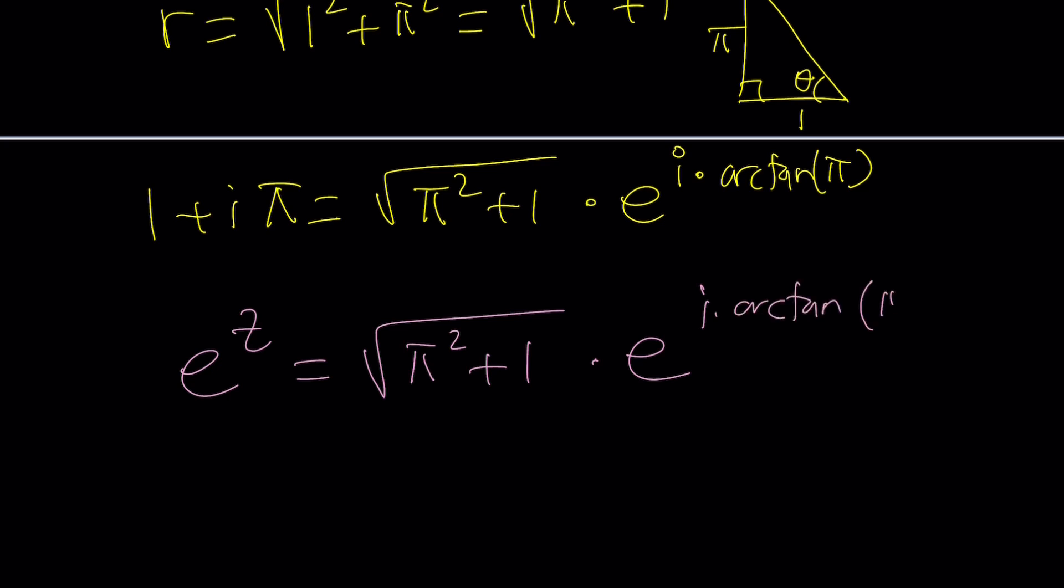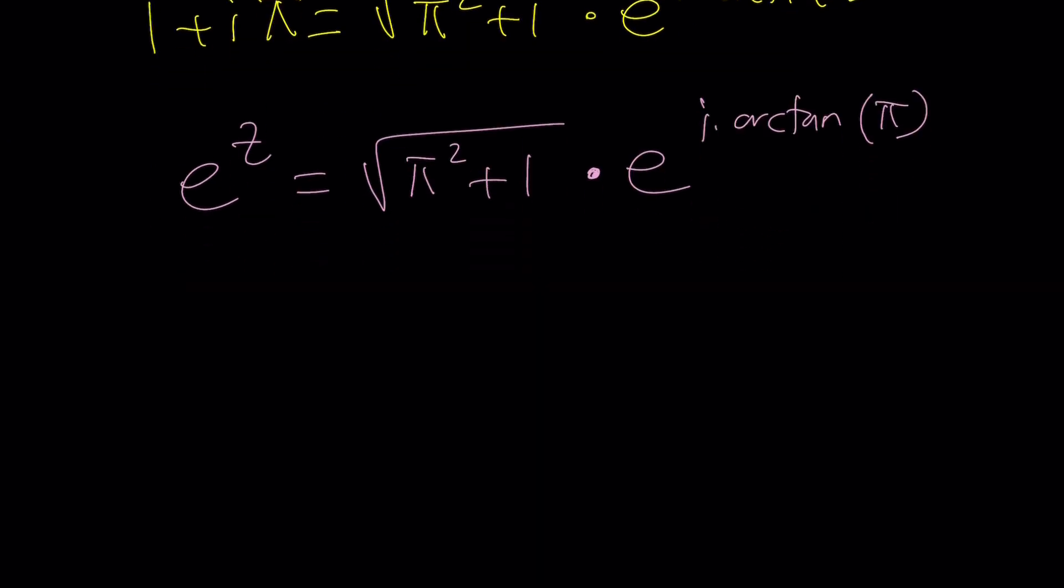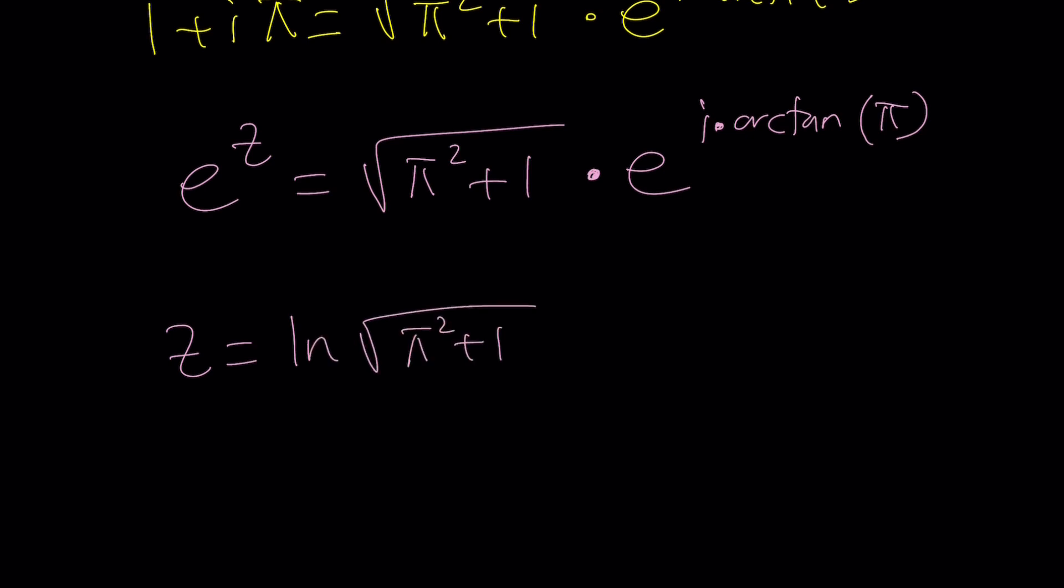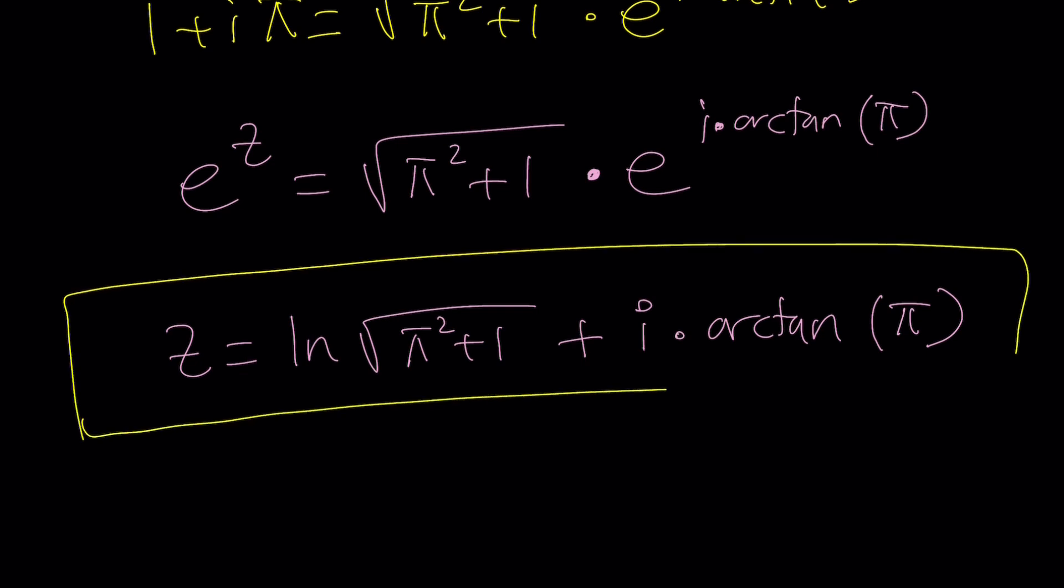And again, even with the simplifications, this can get quite complicated because it's complex. So now we're going to do the natural log again. And this is going to give us z equals ln of the square root of π squared plus 1. And now when you ln a product, it's going to turn into a sum plus i times arctan π. Of course, this is the particular answer, like probably the principal value for z. But if you plug it in, it'll work.